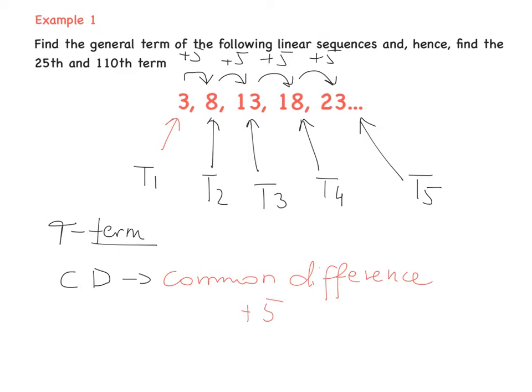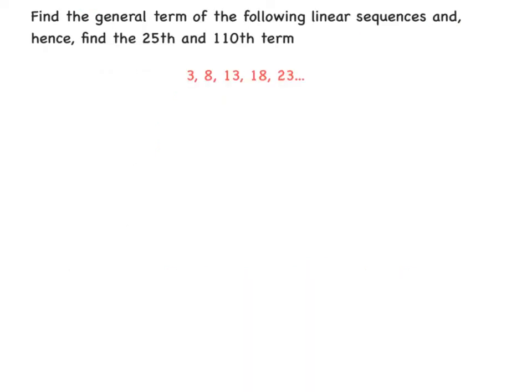If we know our first term and our common difference, we are able to tell the next term. So term 6 is 23 plus 5, which is 28, and so on. But what if we are asked to find the 25th term or 100th term? Today we will be creating a rule to find any term we need. We are asked to find the general rule and hence find the 25th and 110th term. First, we need to find the general term, and then we can find the 25th and 110th term.